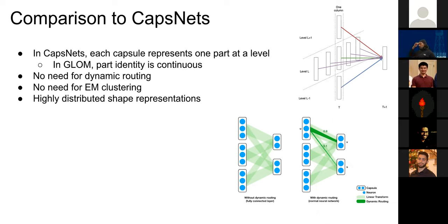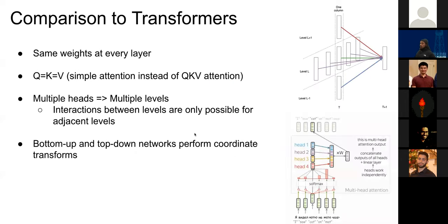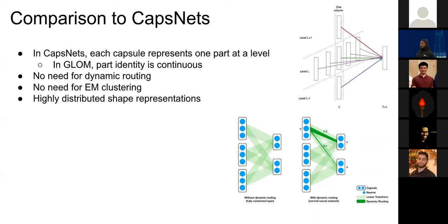One potential downside compared to capsule networks: the highly distributed shape representations in GLOM may not be a positive. In capsule networks, each capsule explicitly corresponds to a part — you only need to look at a relatively low-dimensional representation to determine everything about the eyes including their shape. In GLOM, the shape of an object is determined by how many embeddings share the same orientation, so we have to examine all vectors in a particular layer to draw the boundary and determine the shape. This may be a disadvantage for tasks like object detection or image segmentation.